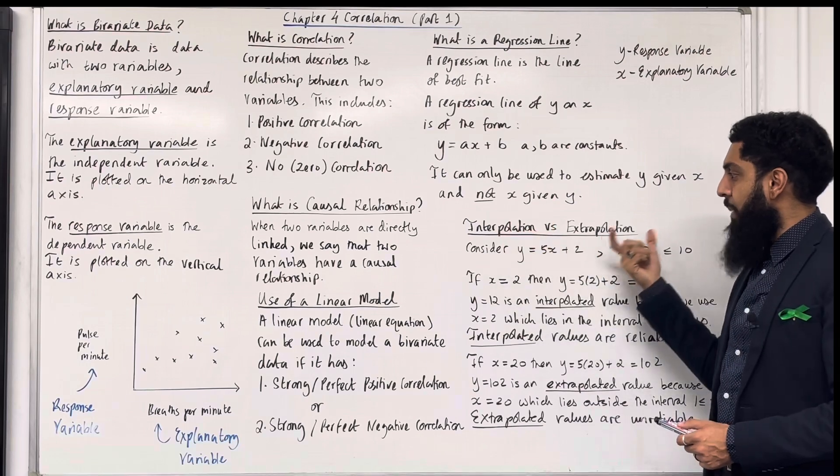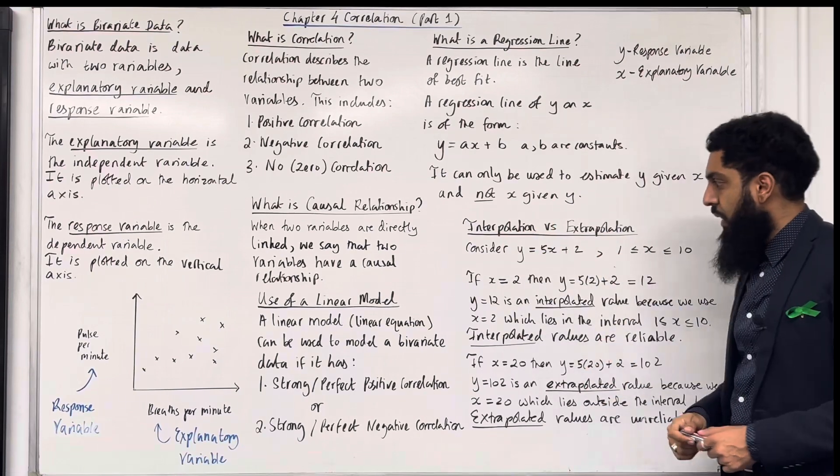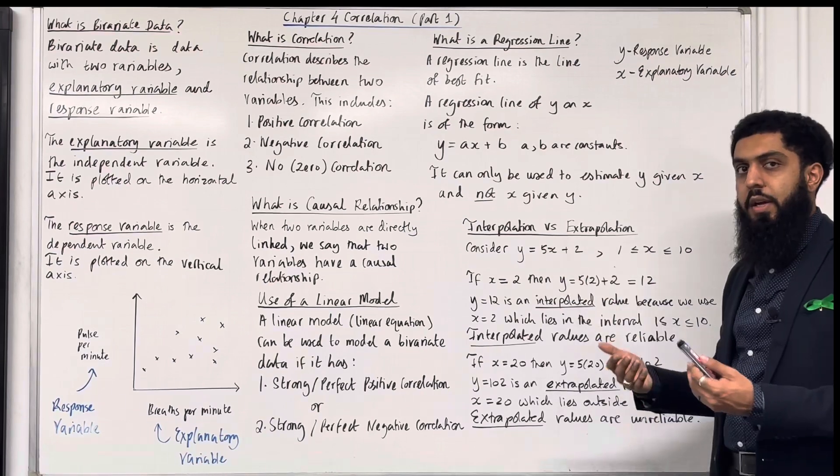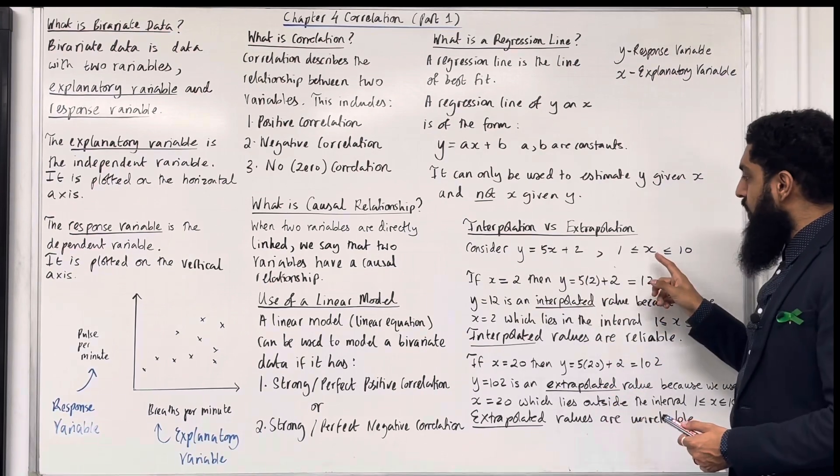Interpolation versus extrapolation in correlation. Consider y equal 5x plus 2. This is a linear model, or you could say linear equation. x is between 1 and 10, inclusive.